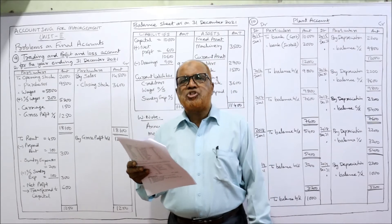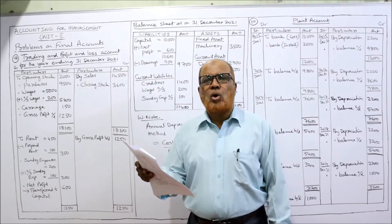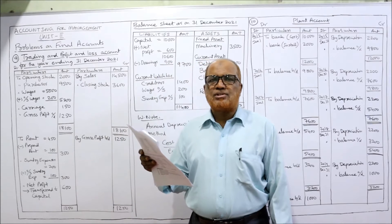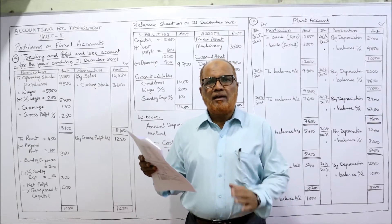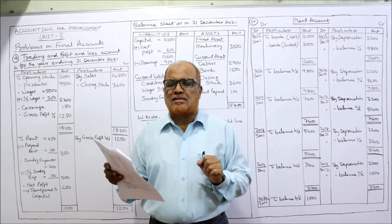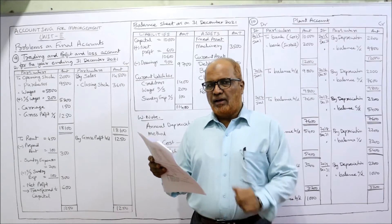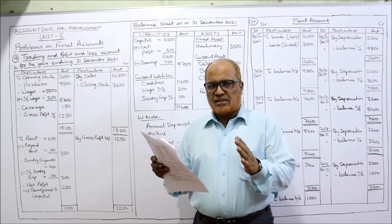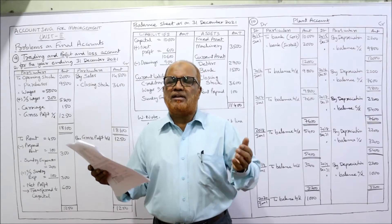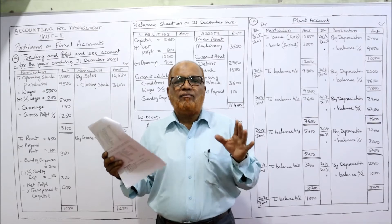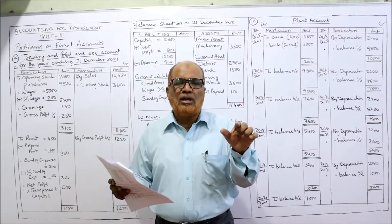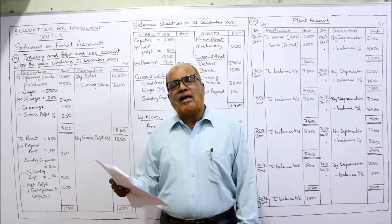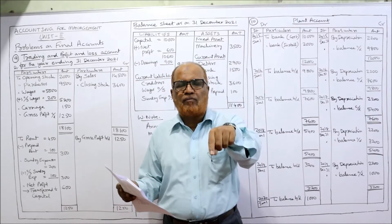Capital is on the liabilities side. Machinery is a fixed asset. Drawings are on the liabilities side — deduct from capital. Creditors are a current liability. Purchases are trading debit. Wages are trading debit. Bank is a current asset. Sales are trading credit. Sundry expenses go to the profit and loss account debit side. For carriage, if nothing is given we assume it is carriage inward and take it on the debit side of the trading account. All trial balance items appear only once — either in the trading account, profit and loss account, or balance sheet.